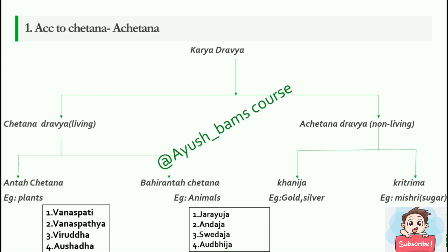According to the Chetana and Achetana classification, Karyadravya is classified into two types: Chetana Dravya — that is living — and Achetana Dravya — that is non-living. Chetana Dravya is divided into two types: Antaha Chetana and Bahiranta Chetana. Examples of Antaha Chetana are plants — Vanaspati, Vanaspatya, Virudha, Aushadha. The example for Bahiranta Chetana is animals: Jarayuja, Andaja, Svedaja, Audbhija.